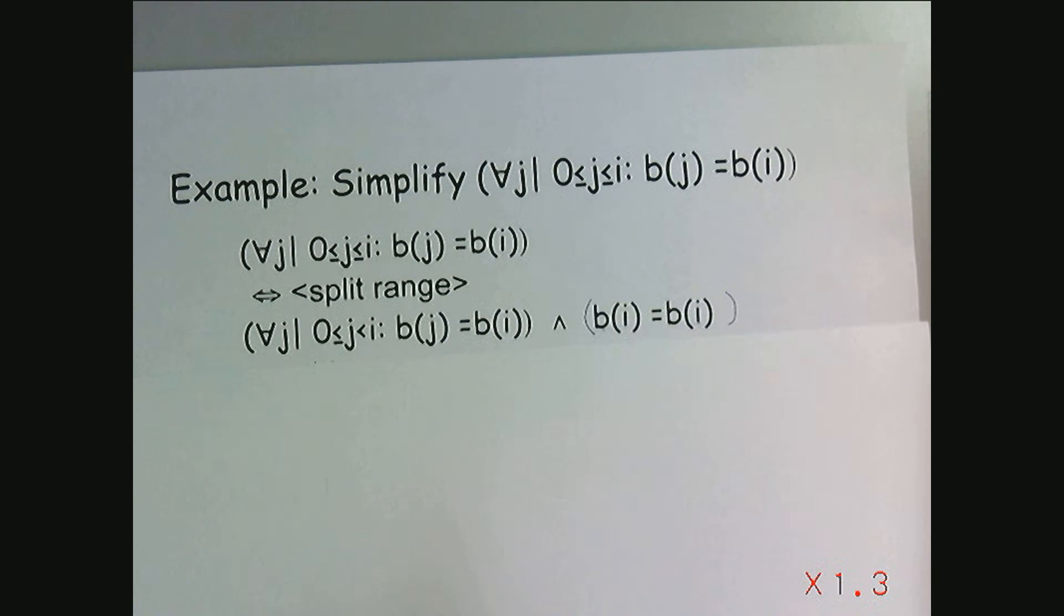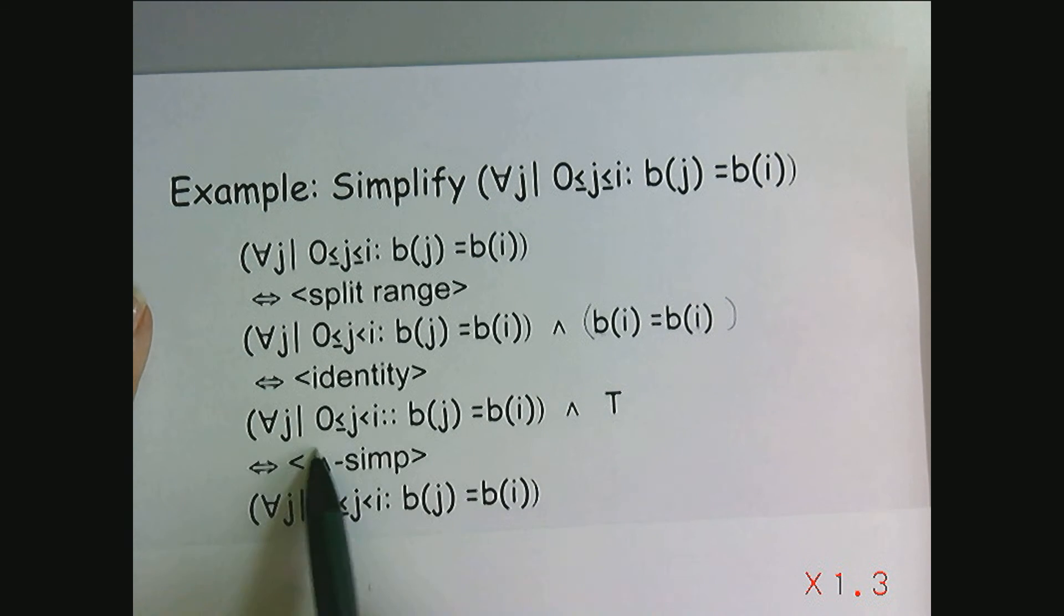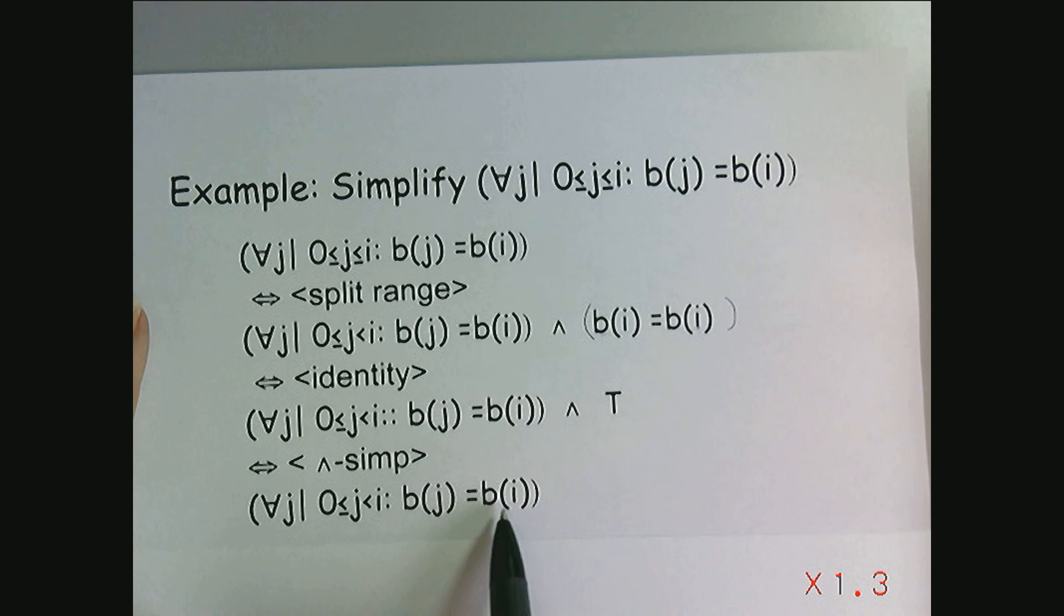Now again, BI equal to BI is true by identity. And any expression and true by and simplification is our original expression. So this quantification simplifies, well you might say that doesn't look much simpler, but the range has changed slightly to the expression for all J between zero and I, not including I, BJ is equal to BI. And you could continue if you wanted splitting off the range piece by piece and try to simplify this further, but right now this is the furthest I can simplify it.